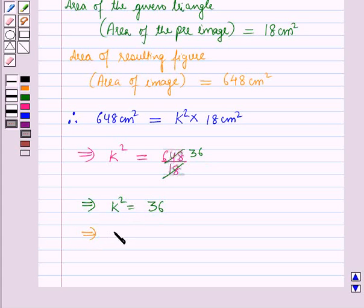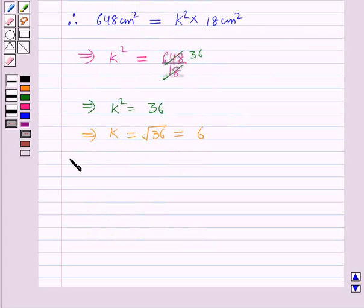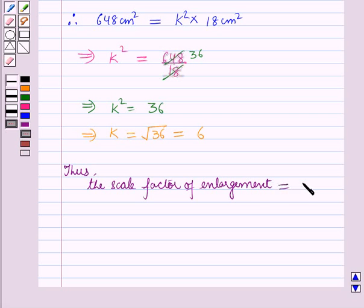This implies k equals the square root of 36, which equals 6. Thus, the scale factor of enlargement equals 6.